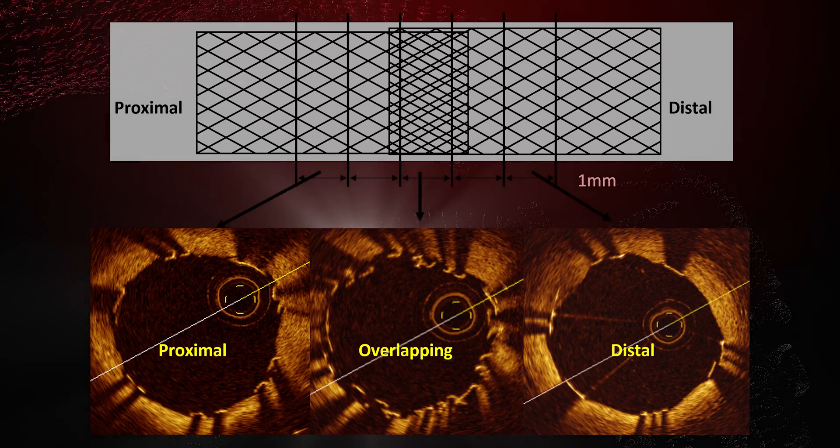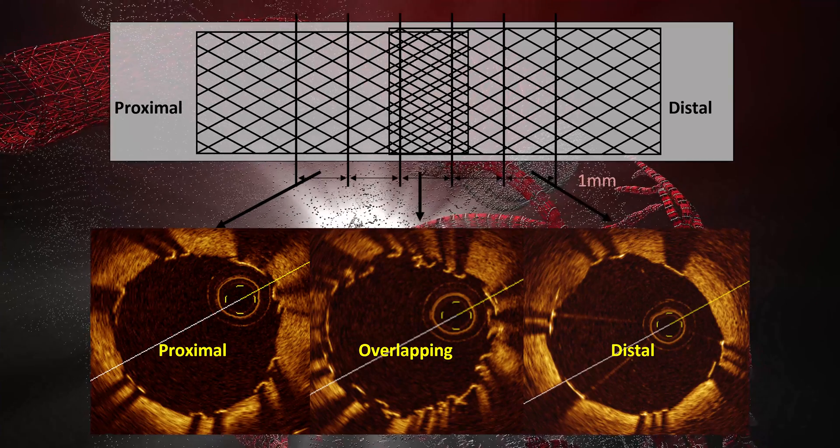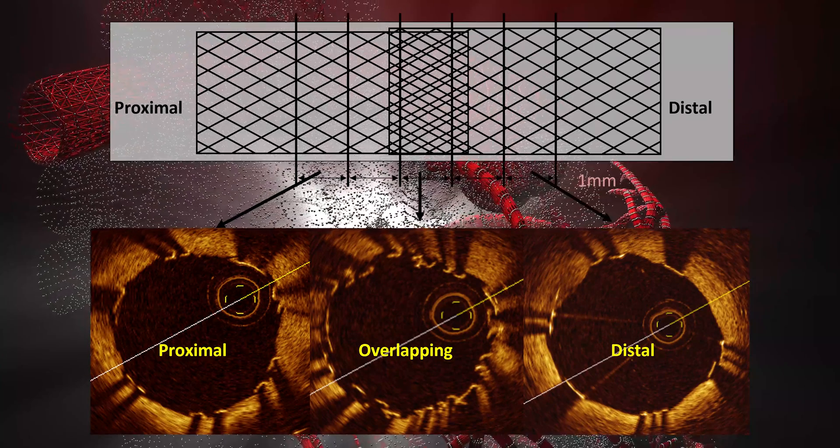When does it happen? When there are multiple stents, there's a higher chance. When the stents are overlapping and you've got metal inside metal, the layers of metal become quite thick, and that thick bit of metal is more prone to breaking and fracturing.